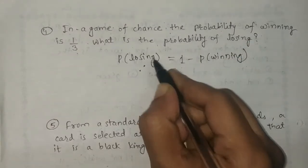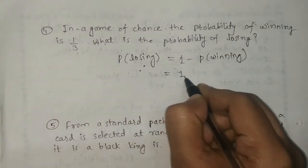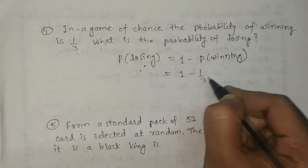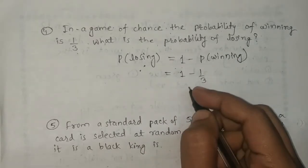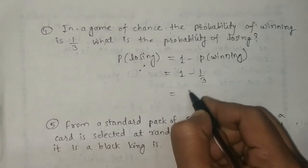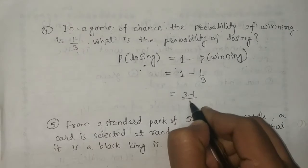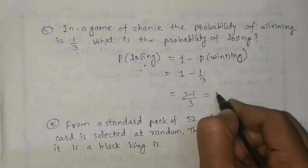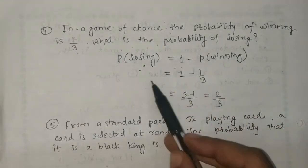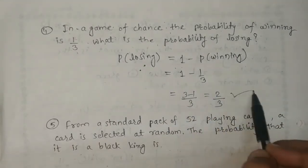So probability of losing equals 1 minus probability of winning, which is 1 minus 1 by 3. Solving this gives 3 minus 1 by 3, that is 2 by 3. So the probability of losing is 2 by 3.